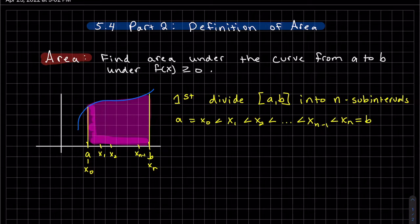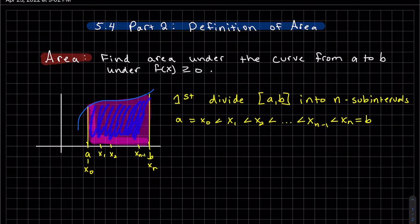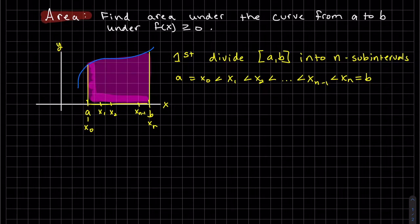Our problem today is to find the area under the curve from a to b, where the curve is greater than zero — it's above the x-axis. We first divide the section a to b into equal subsections. We'll call that width delta x, and to figure out that width we take b minus a divided by how many sub-intervals we want, giving us all equal widths for each interval.